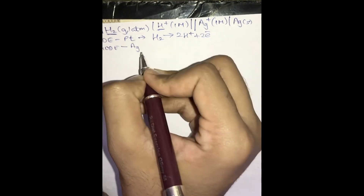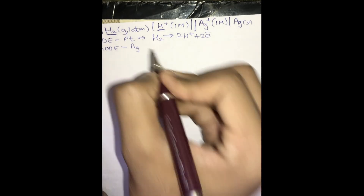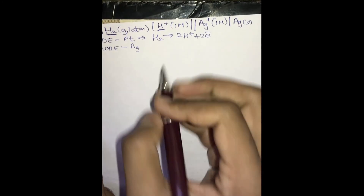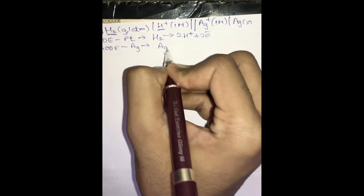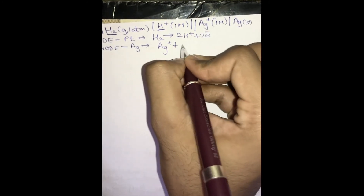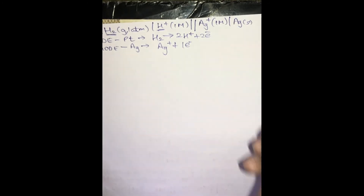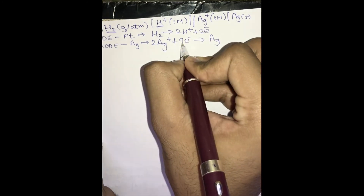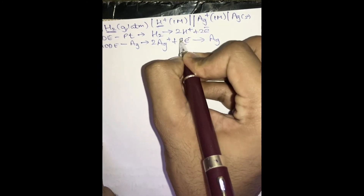At the cathode there is Ag. At cathode, reduction takes place — that is gain of electrons. Ag⁺ will gain electrons and become neutral Ag. Since there are two electrons lost, we need to consume both, so we write 2Ag⁺ + 2e⁻ → 2Ag, so that both electrons are taken by the Ag⁺ ions.